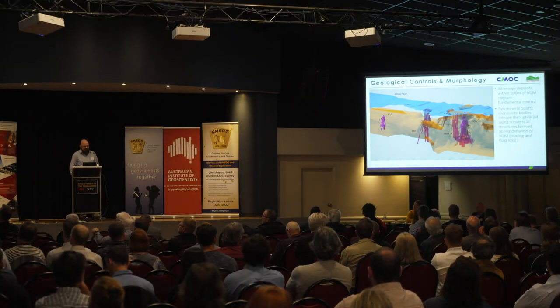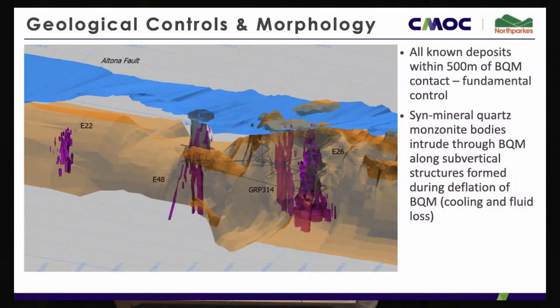A key exploration ranking factor for us is proximity to that large-scale monzonitic magma. All known economic deposits lie within 500 metres of a contact of the biotite quartz monzonite. Systems further than 500 metres away tend to be sub-economic and limited in scale. The porphyries are emplacing into that shallow crustal environment along planes of weakness corresponding to cooling fracture sets within the biotite quartz monzonite, particularly where it has higher relief with the surrounding volcanic facies.